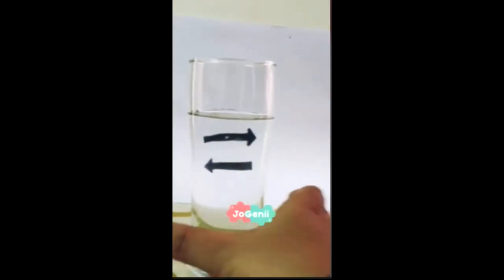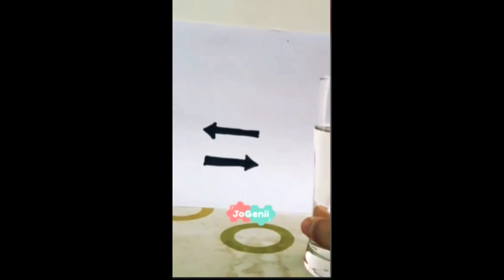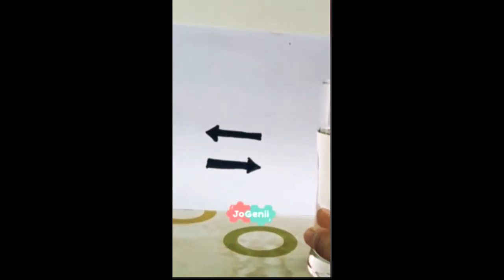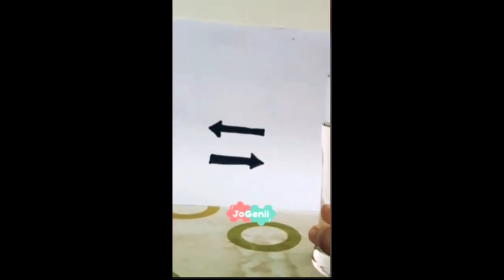But on the paper, if you see with the naked eye, it's the top arrow pointing left, bottom pointing right.